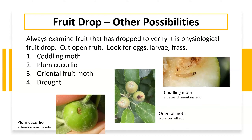A fourth reason — and again this is physiological — is drought. If trees are not getting enough water to supply the fruit with what it needs to reach complete maturity, fruit drop will occur. So fruit drop in June is normal. If you see fruit on the ground, pick some up, look for potential damage, and cut those fruits open to see if there's any damage on the inside — then you'll know exactly what might be occurring.